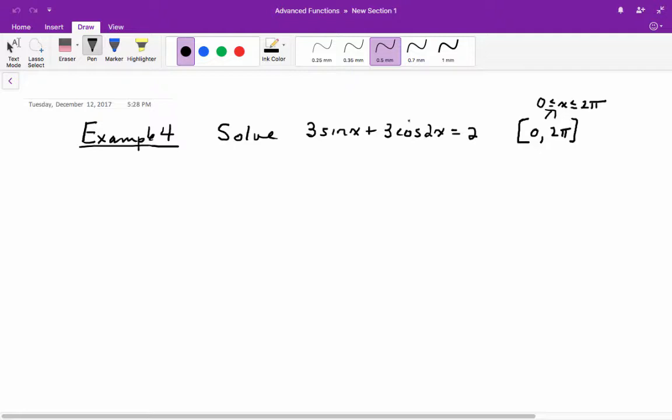For example, you notice we have a double angle, and referring back to page 416, cos2x has three different expansions. We want the one that only involves sine. So it's going to be 3 sine x plus 3, replacing cos2x with 1 minus 2 sine squared x, and that's going to equal 2.